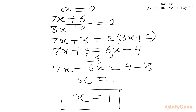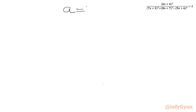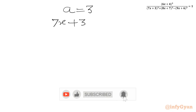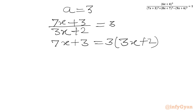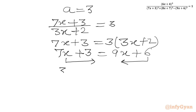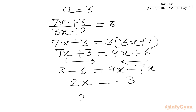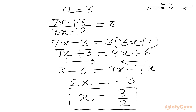Now we will consider a equals 3. A was (7x plus 3) over (3x plus 2) equals 3. Cross-multiplying: 7x plus 3 equals 3 times (3x plus 2), or 7x plus 3 equals 9x plus 6. Taking 7x to the RHS and 6 to the LHS: 3 minus 6 equals 9x minus 7x, so 2x equals negative 3, giving x equals negative 3 over 2. So we have two solutions: x equals 1 and x equals negative 3 over 2.